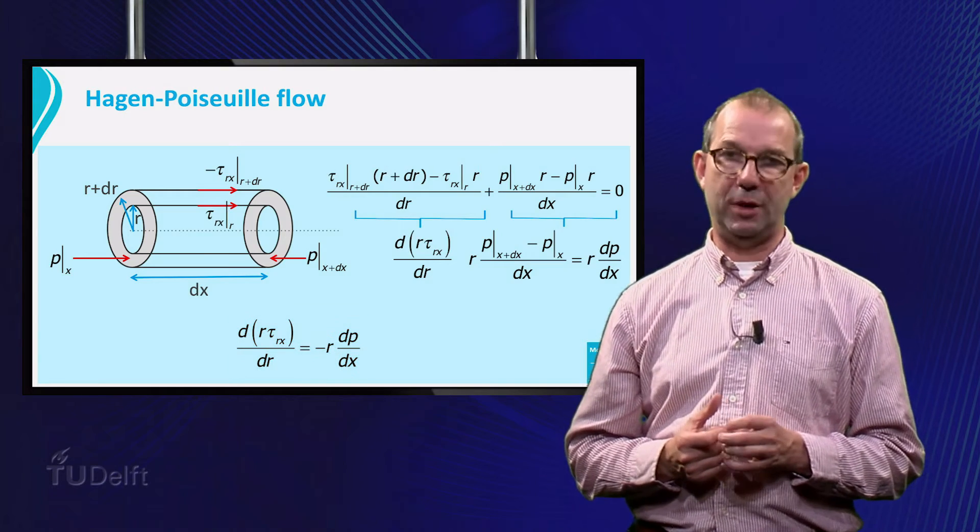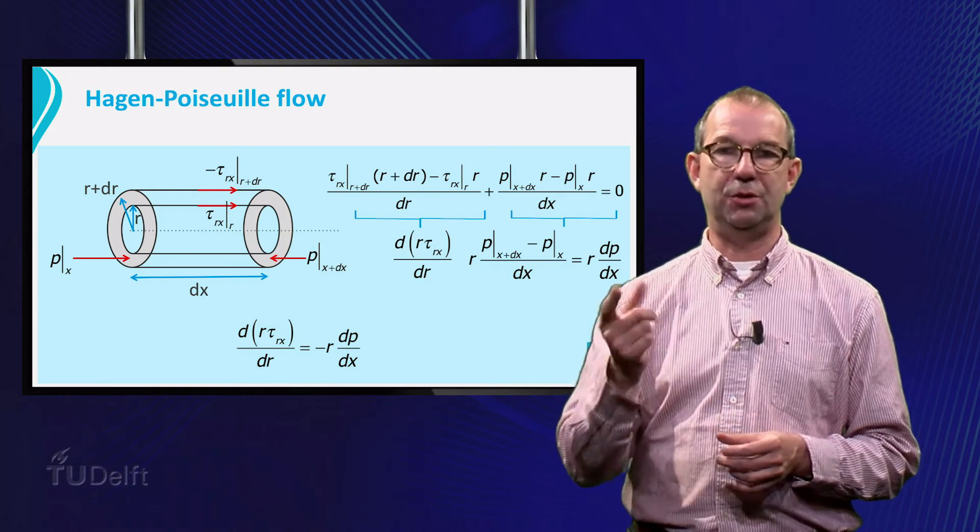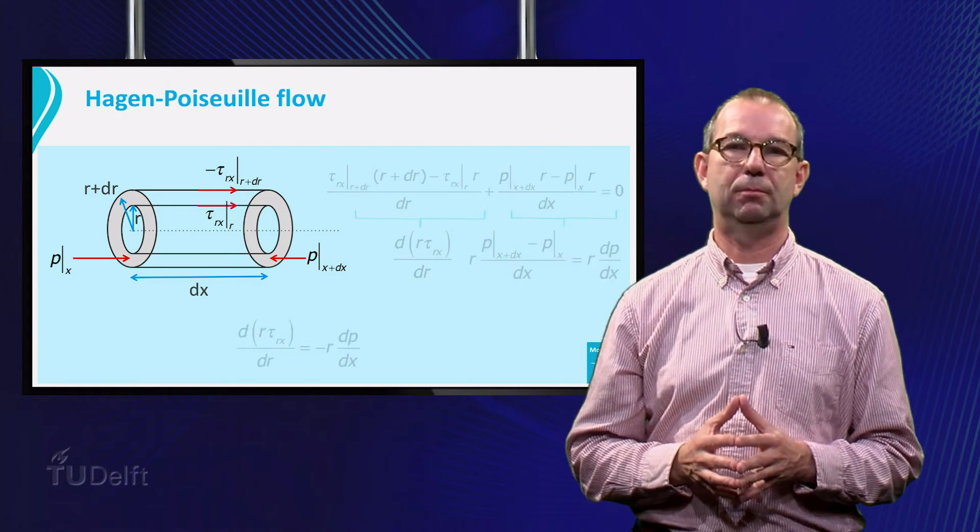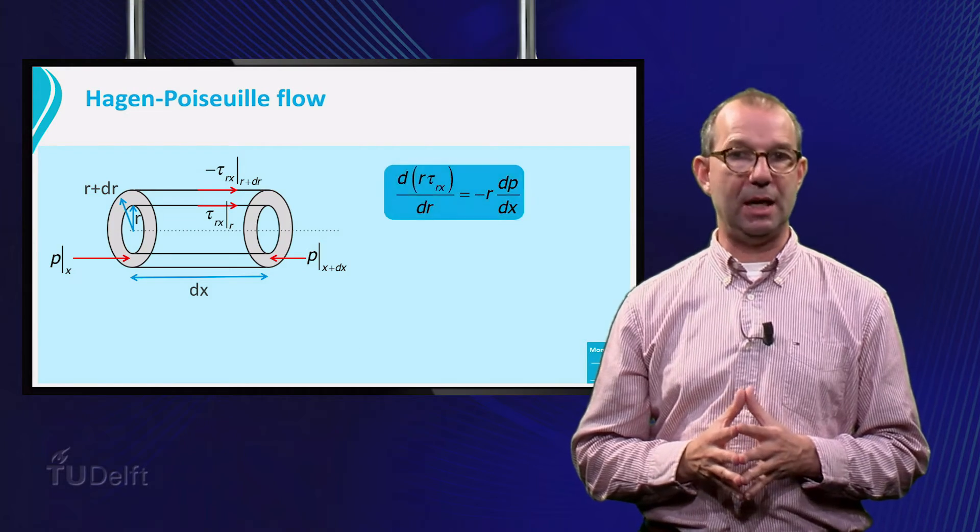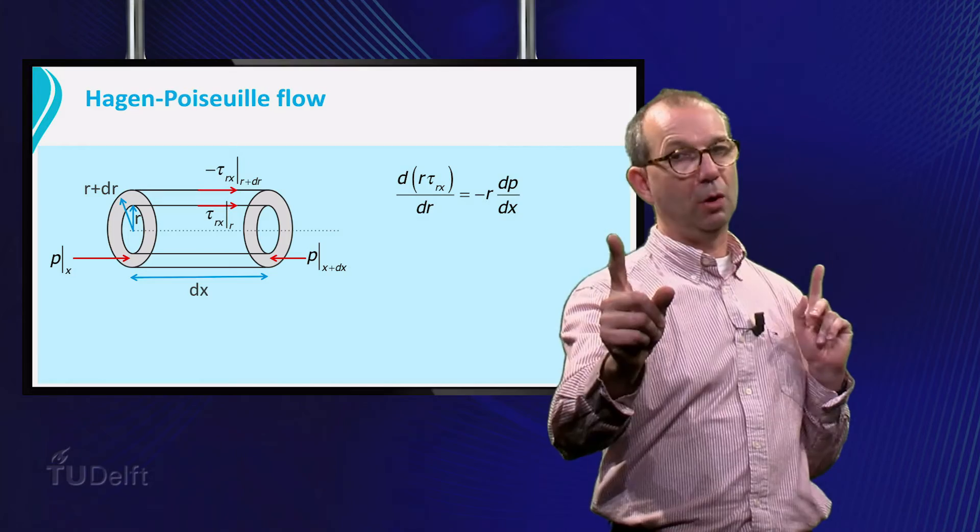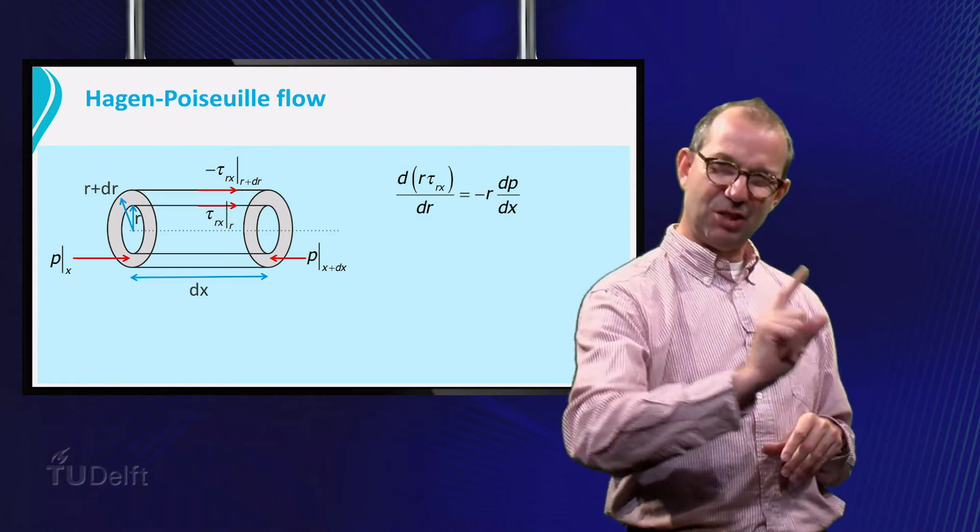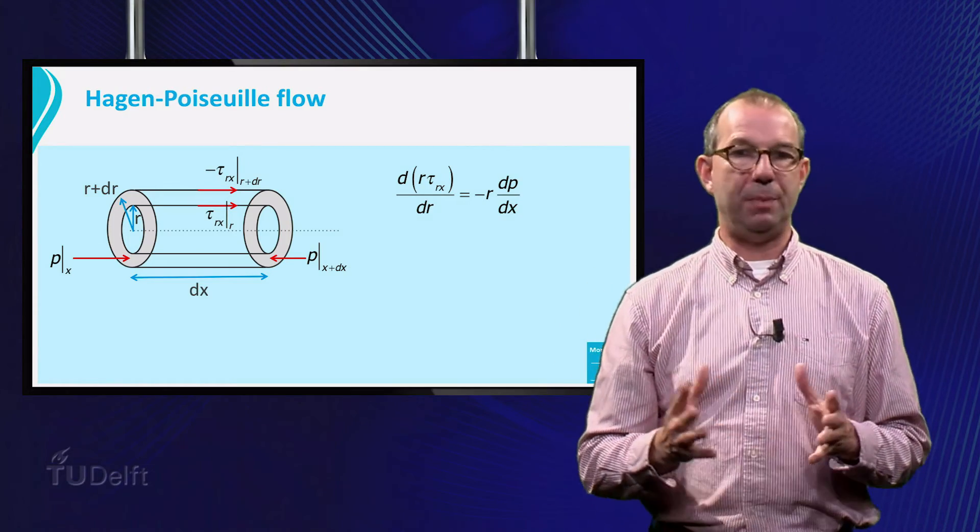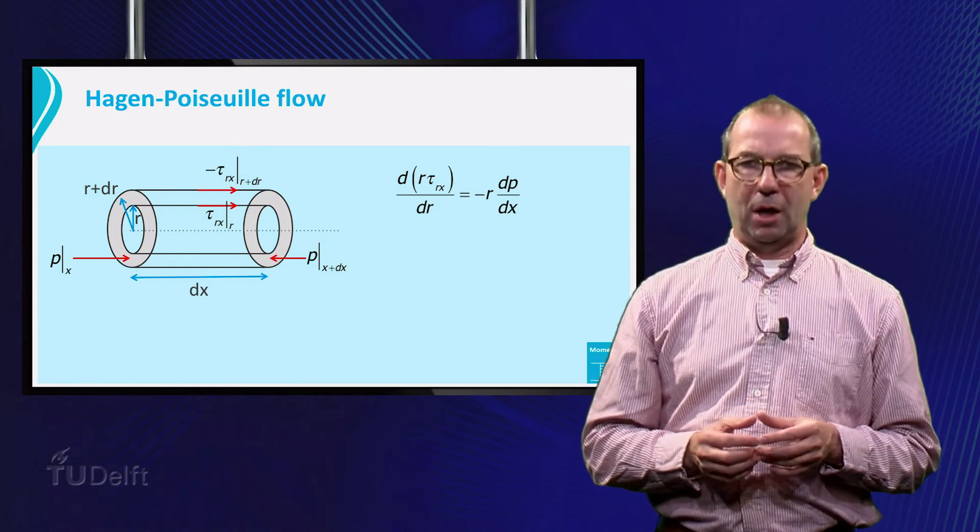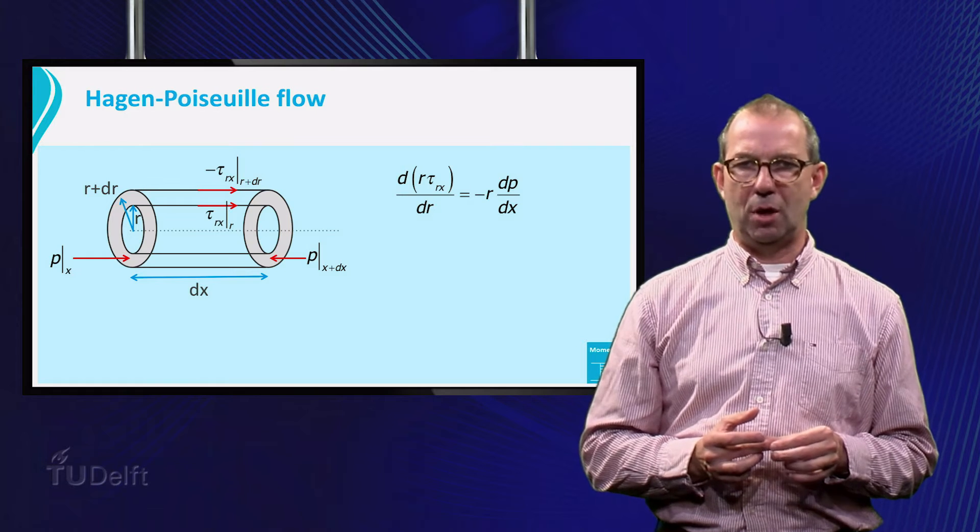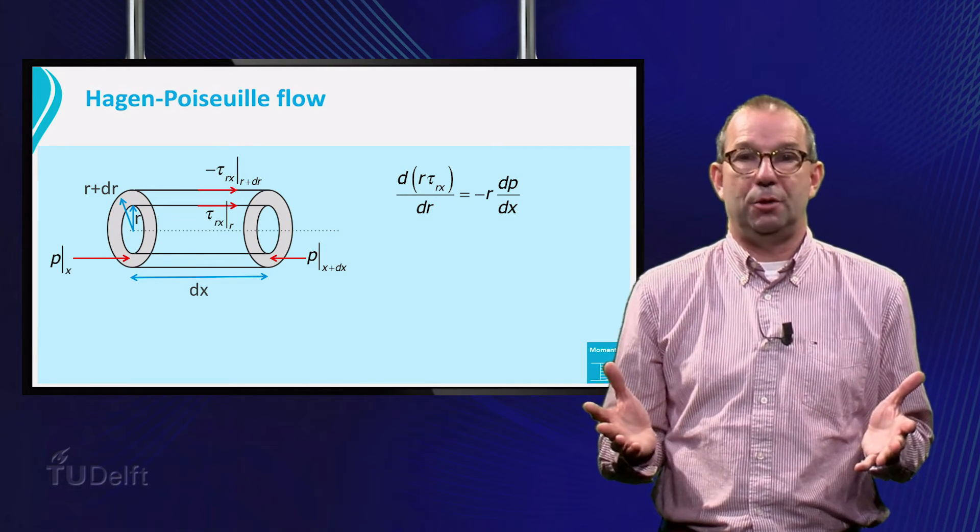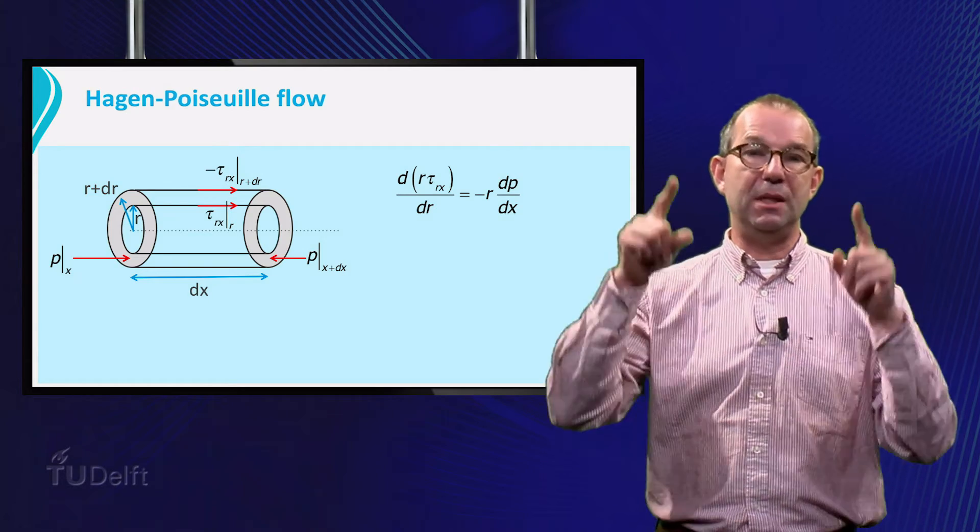So, we arrive at the differential equation for the shear stress, dr of r tau equals minus r dp dx. The pressure gradient dp dx is a constant. It does not depend on x, as the tube is very long. Hence there is an axial symmetry. It does not depend on r either, as we left out gravity. Thus there are no vertical forces acting rather than the pressure. Consequently, as nothing is accelerating in the vertical direction, the pressure must be the same everywhere.